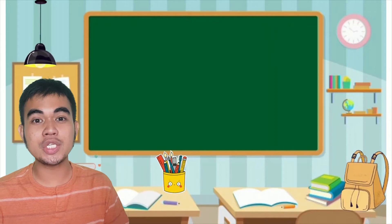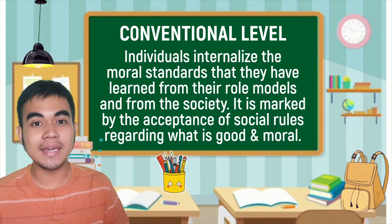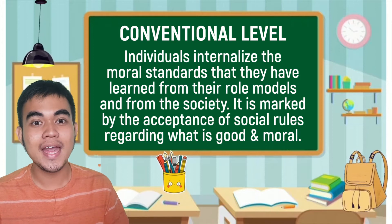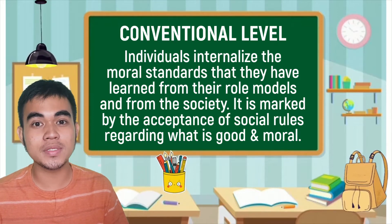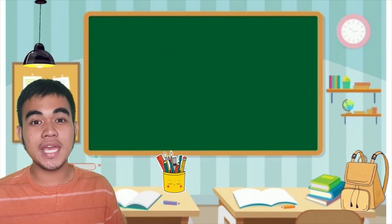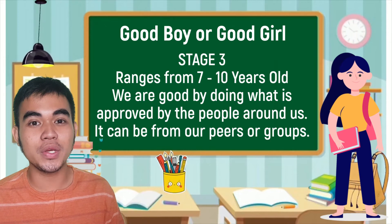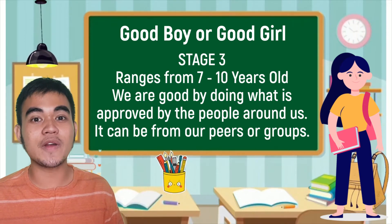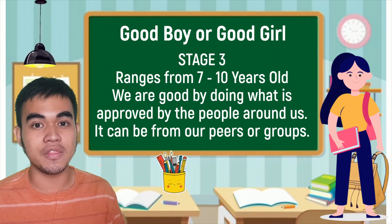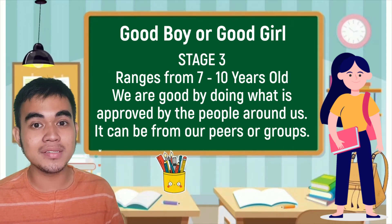After the pre-conventional level follows the conventional level. At this level, people internalize the moral standards that they have learned from their role models and from the society. It is marked by the acceptance of social rules regarding what is good and what is moral. Under the conventional level, we have stage 3 and stage 4. Stage 3 is also known as the good boy or good girl orientation, which happens from 7 to 10 years old. At this stage, we are good by doing what is approved by others.